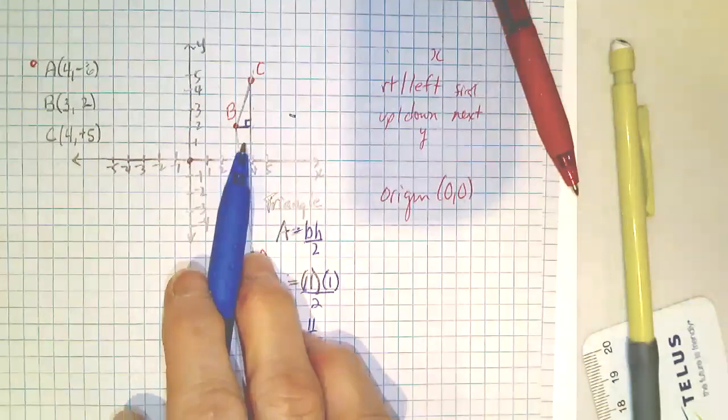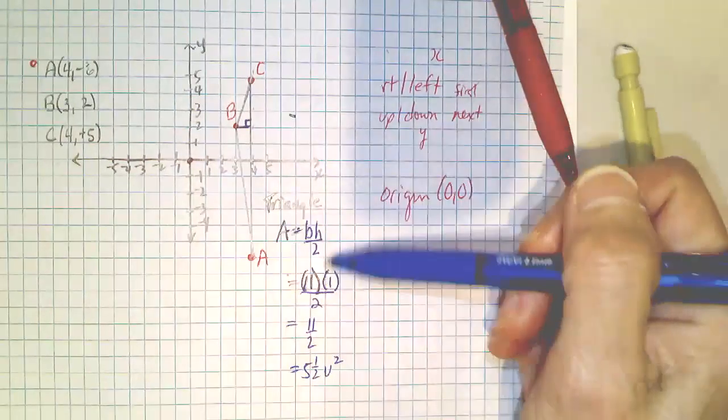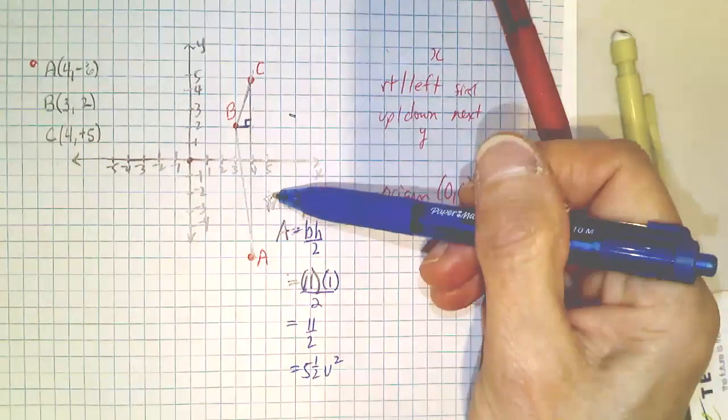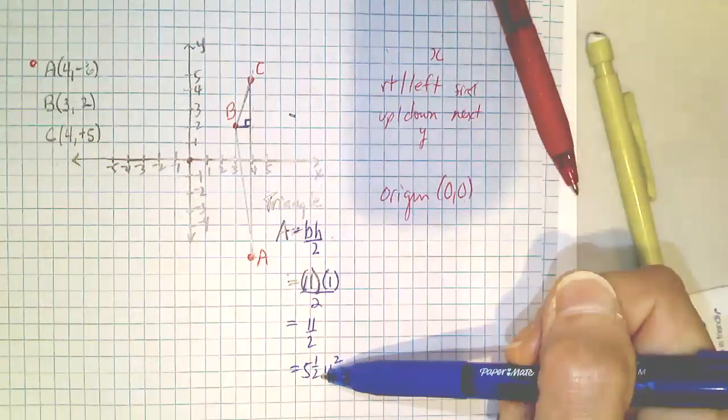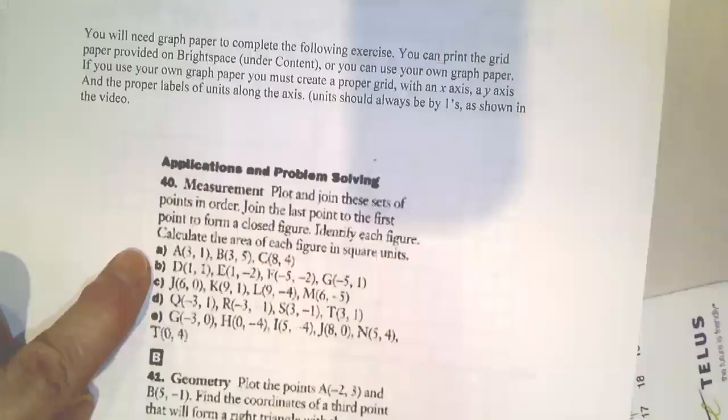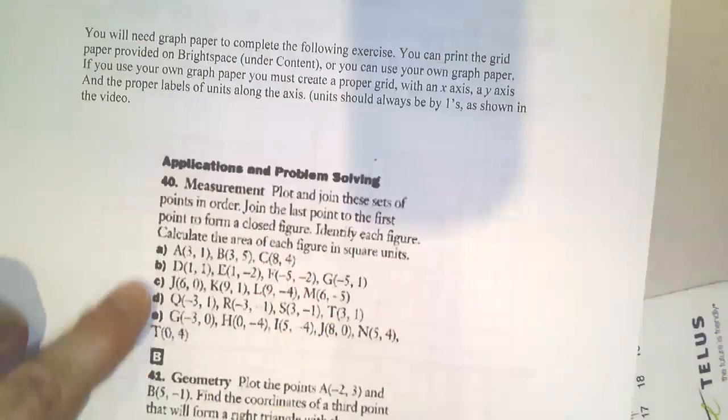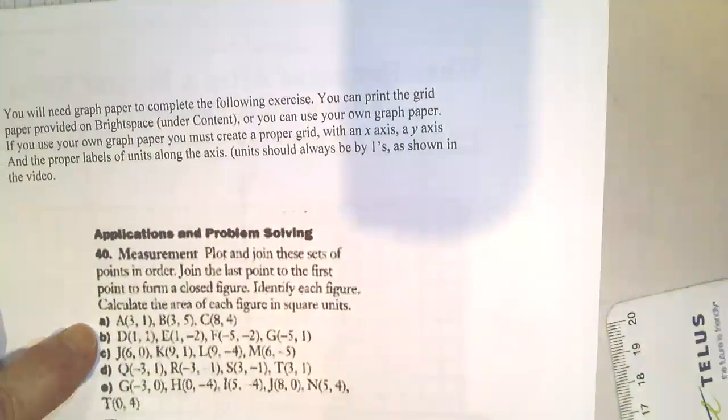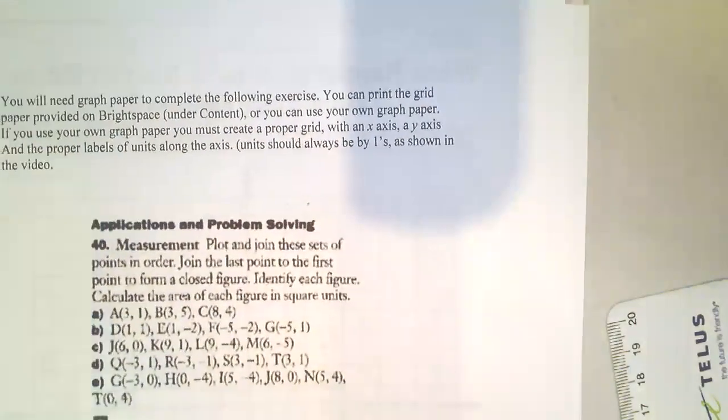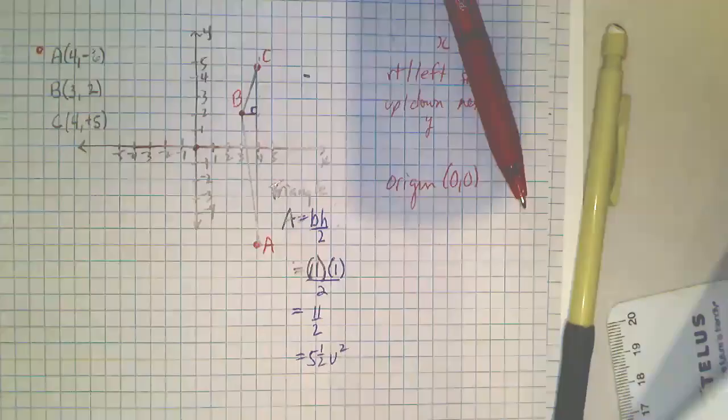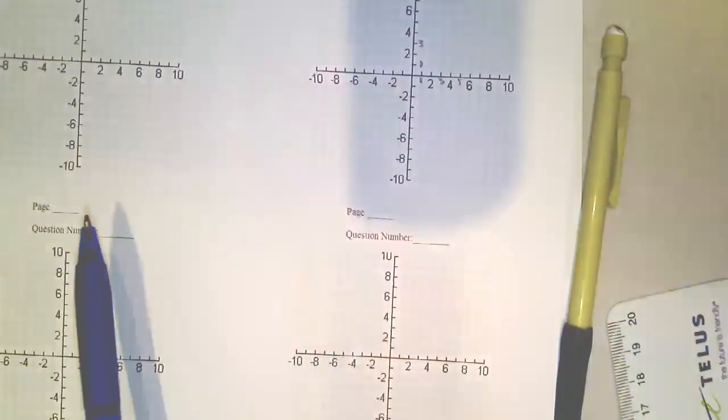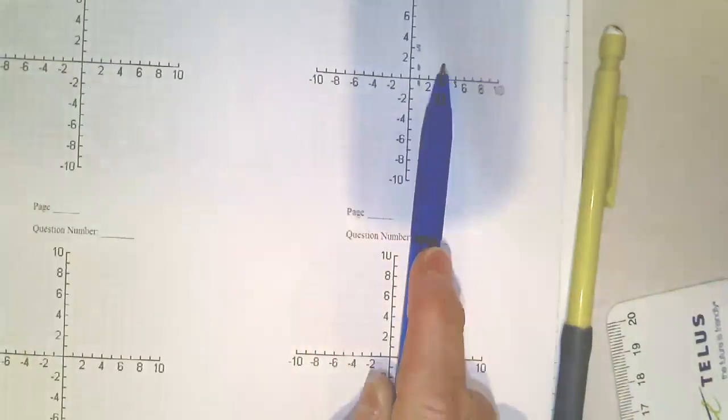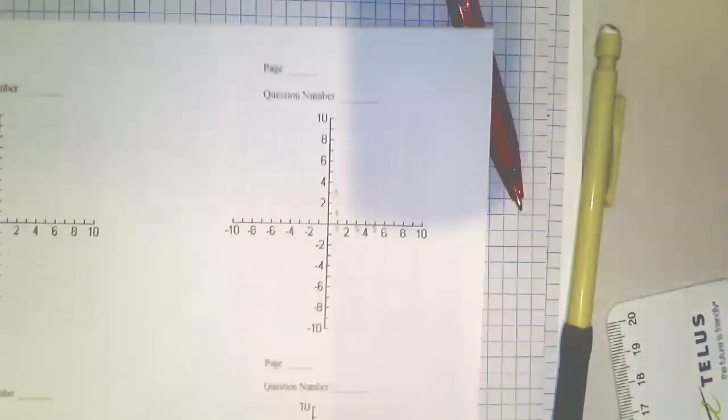So you have to construct it, connect the lines in order, name it, put the formula down for that shape, and work it out. And there are five different ones to do here. You have to make a grid for A and do it. You have to make a new grid for B. Don't put them on the same grid. Each one goes on a separate grid. So if you print up the paper from, if you can, you can put A here, B here, C here, and so on. And you label it.